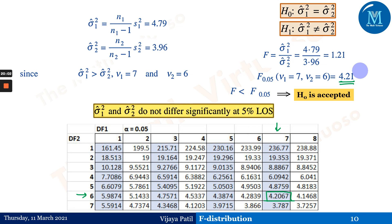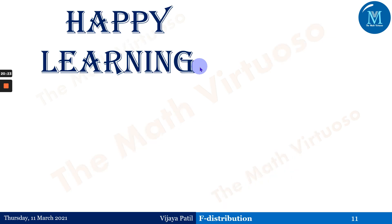From s₁², we compute σ̂₁² = n₁s₁²/(n₁ − 1) = 4.72. Similarly σ̂₂² is computed. Since σ̂₁² > σ̂₂², ν₁ = 7 and ν₂ = 6. The calculated F = 1.21. From the F-table, the critical value F(0.05; 7, 6) ≈ 4.21. Since 1.21 < 4.21, H₀ is accepted — σ̂₁² and σ̂₂² do not differ significantly at the 5% level. This concludes our discussion of the F-distribution and the different types of questions. I hope you have understood. Thank you, happy learning!